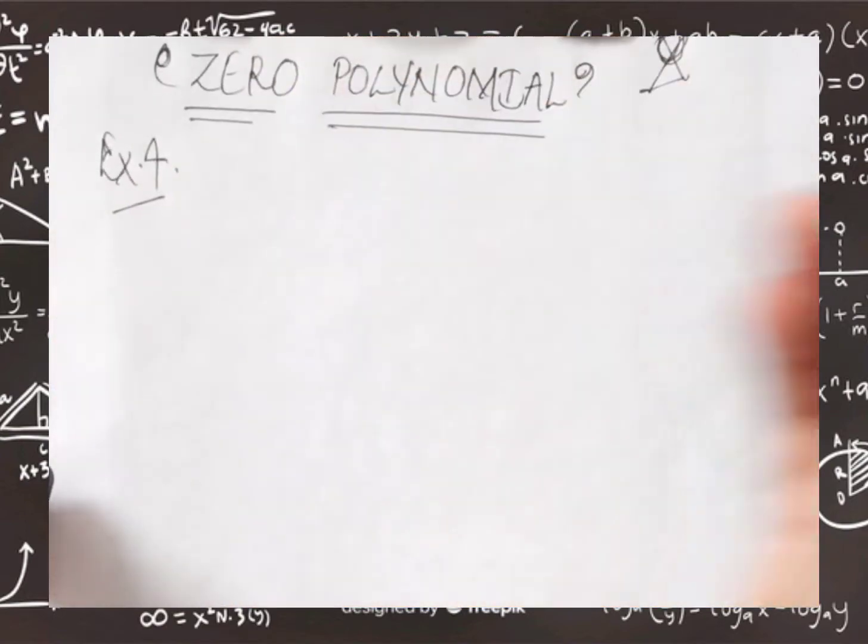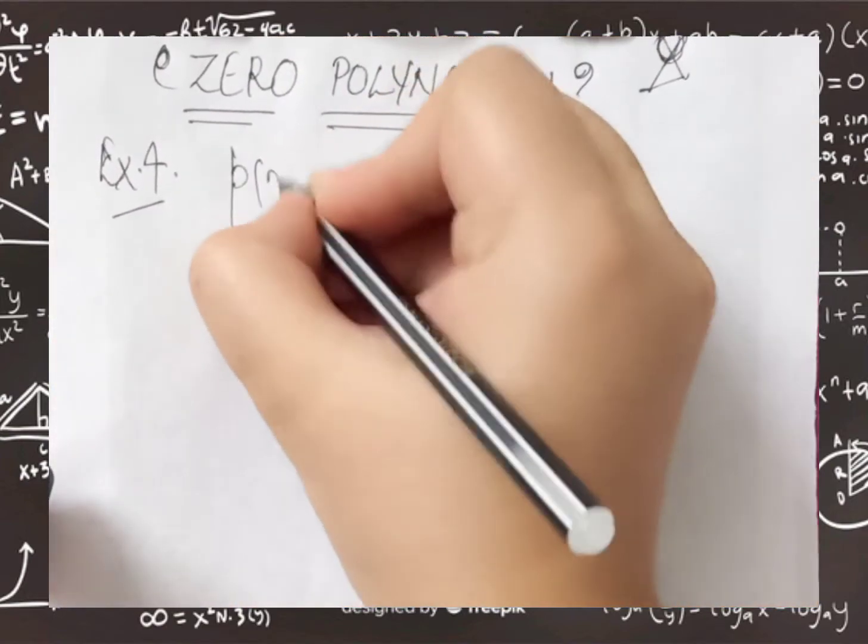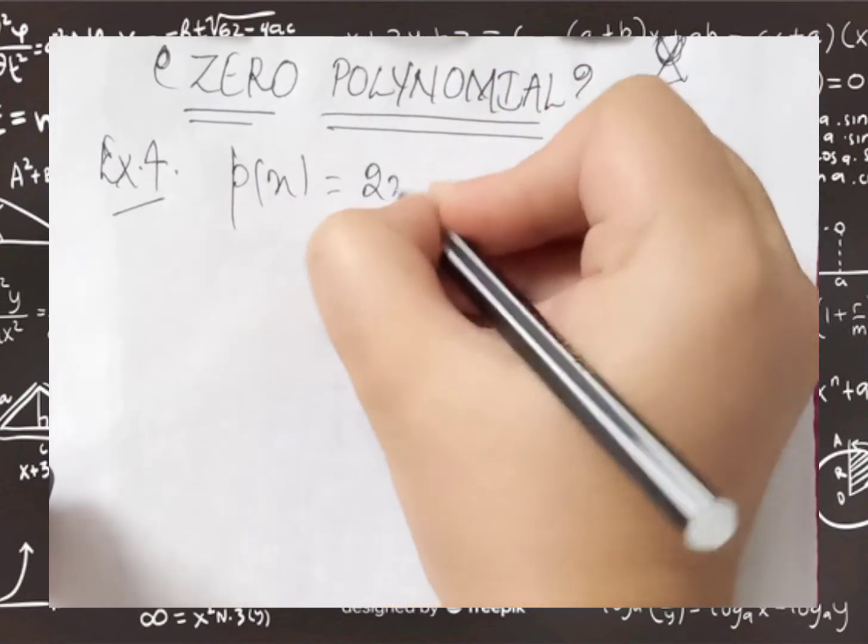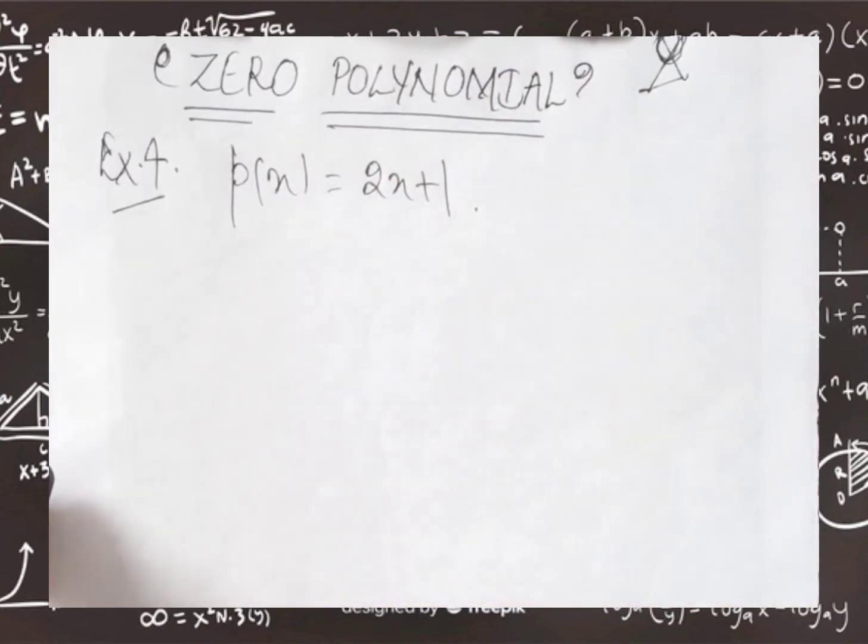It says, find a zero of the polynomial, px is equals to 2x plus 1. Now, here we are going to say zero of the polynomial, not zeros of the polynomial.